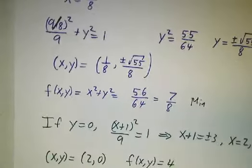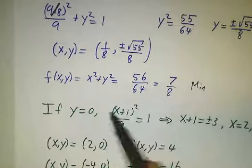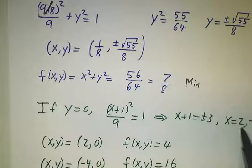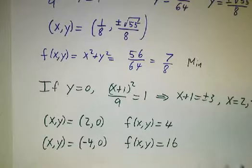The other possibility was that y is 0. And if y is 0, well then you are on the x-axis and x has to either be negative 2 or 4. And you can see that the values of the function at negative 2 is 4 and at negative 4 is 16, those are farther away.